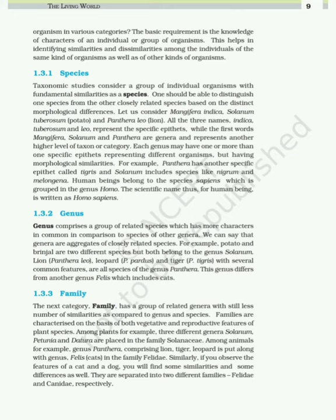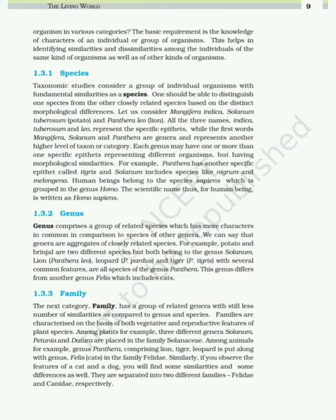Taxonomic studies consider a group of individual organisms with fundamental similarities as a species. One should be able to distinguish one species from another closely related species based on distinct morphological differences. Consider Mangifera indica, Solanum tuberosum (potato), and Panthera leo (lion). The names indica, tuberosum and leo represent specific epithets, while Mangifera, Solanum and Panthera are genera — a higher level of taxon. Each genus may have one or more specific epithets; for example, Panthera has another specific epithet tigris. Human beings belong to the species sapiens grouped in the genus Homo, written as Homo sapiens.